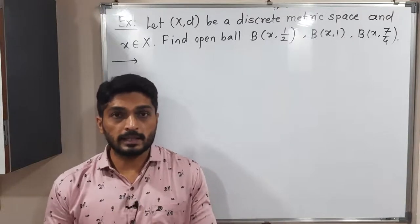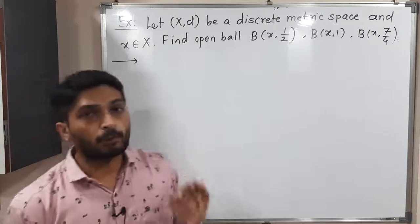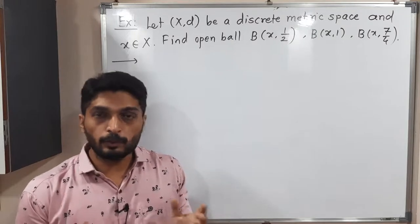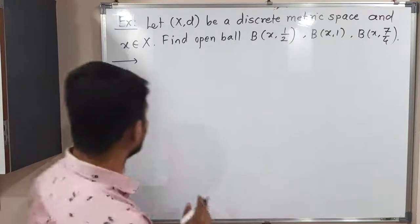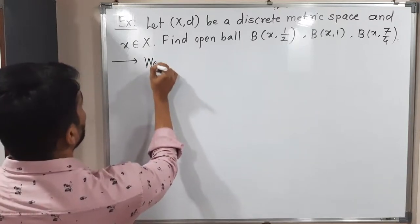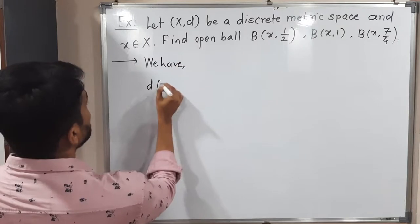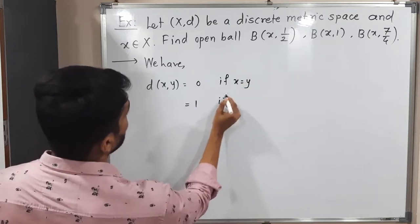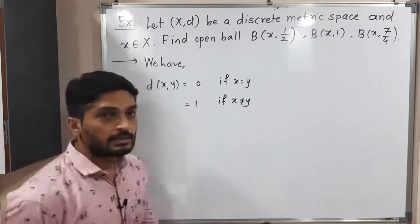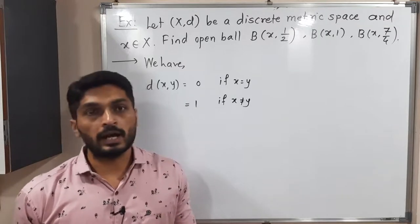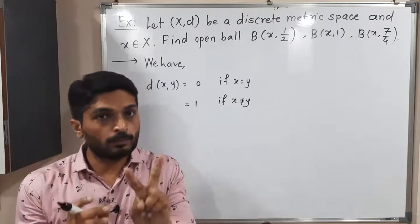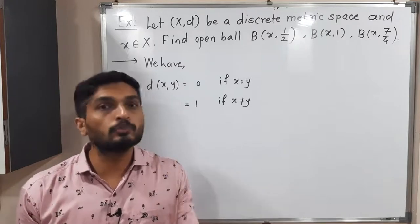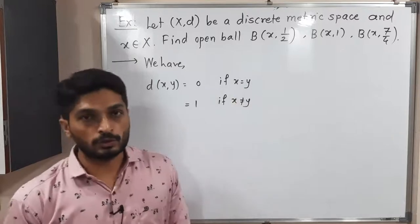Let us discuss this example where we have to find three open balls. The metric space here is a discrete metric space. The discrete metric d is defined as: d(x, y) = 0 if x equals y, and d(x, y) = 1 if x is not equal to y. So in a discrete metric space there are only two distances: either 0 or 1. With this discrete metric we have to find these open balls.